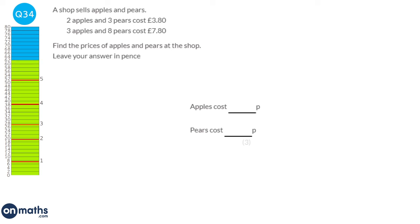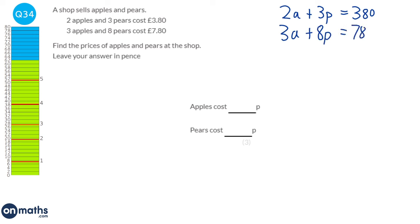This is a simultaneous equations question. Two apples and three pears cost £3.80 (380p): 2A + 3P = 380. Three apples and eight pears cost £7.80 (780p): 3A + 8P = 780. To eliminate the pears, make the coefficients equal — both 3 and 8 go into 24. Multiply equation A by 8 to get 16A + 24P = 3040, and equation B by 3 to get 9A + 24P = 2340.